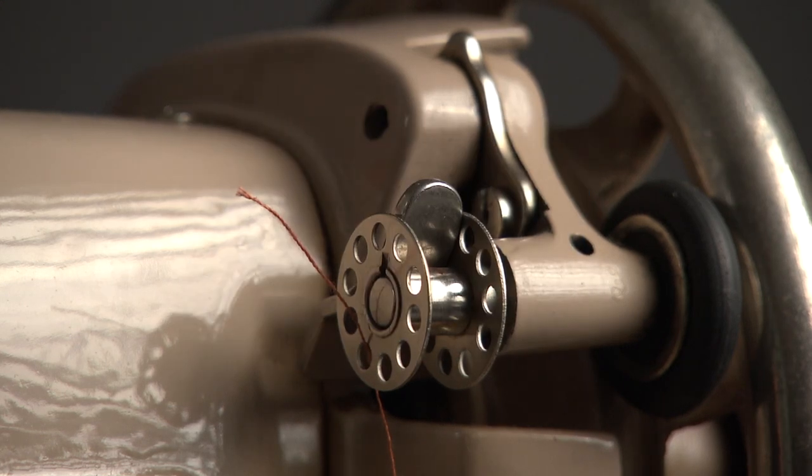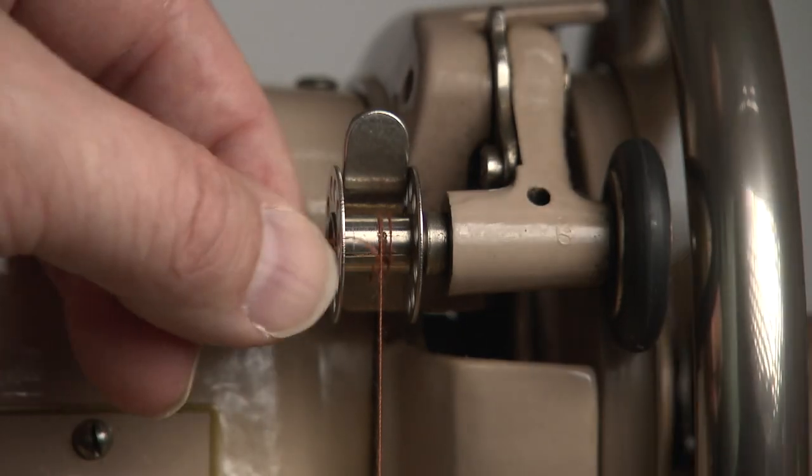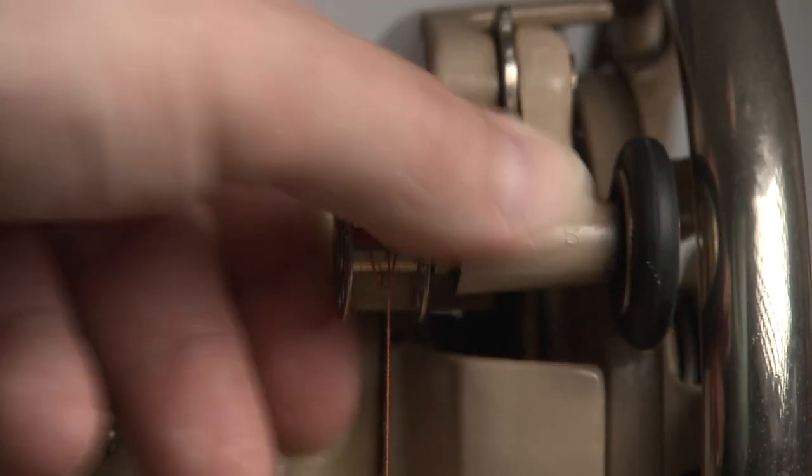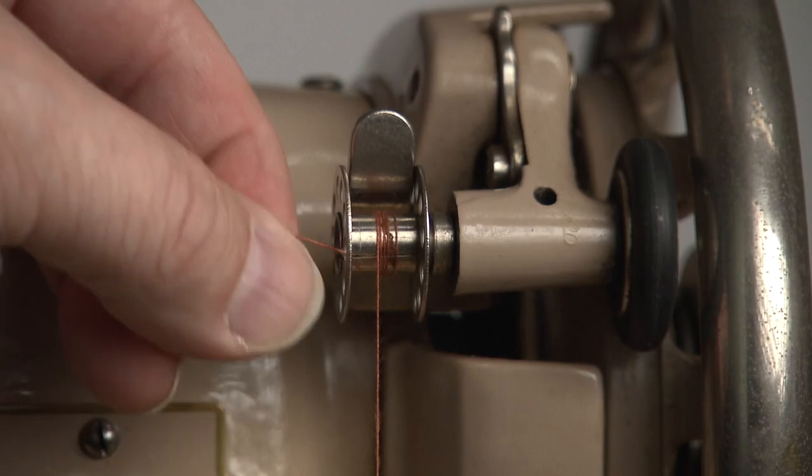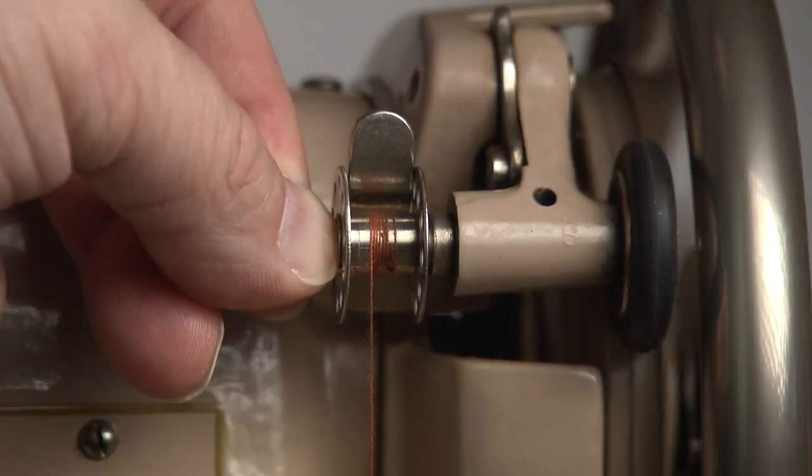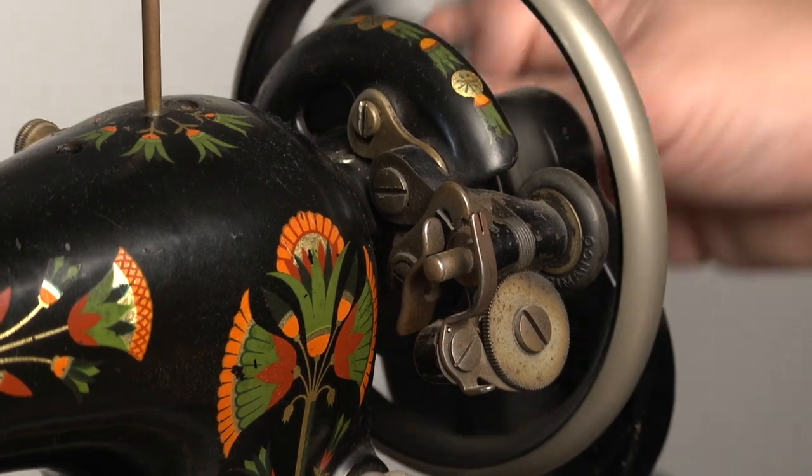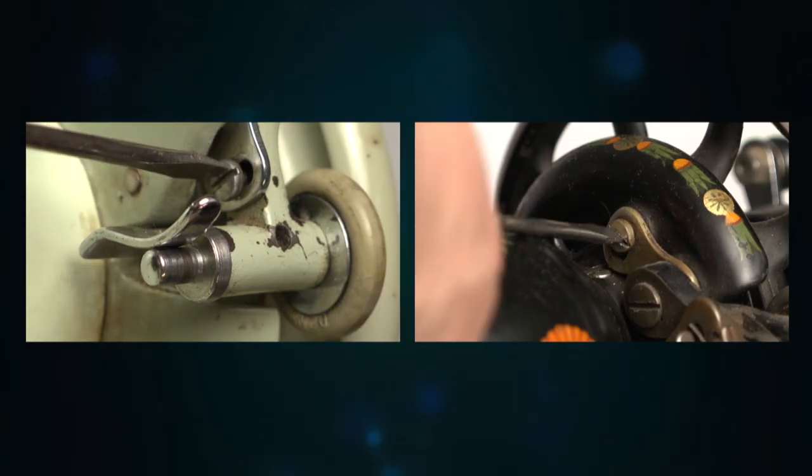Most machines I bought had issues with the bobbin winder. It was too tight and the wheel did not turn properly, or the unit did not lock into place. These two screws can solve most issues.